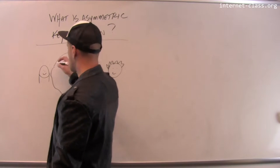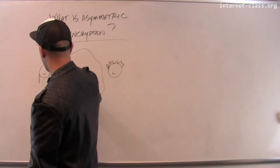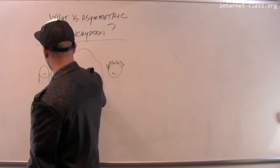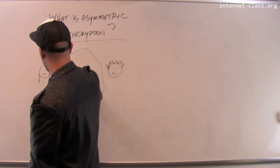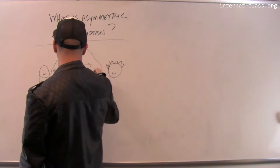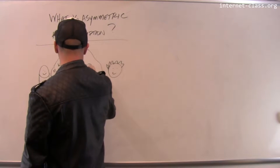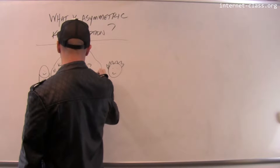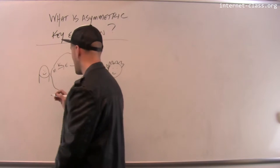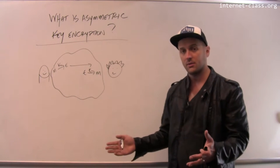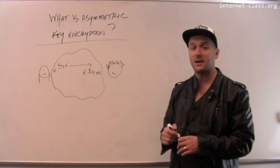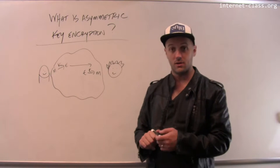In symmetric key encryption, Alice takes her message and transforms it using that key to produce the ciphertext, which is sent to Bob. Bob then transforms that ciphertext using the same key to recover the original message. This is symmetric key encryption.